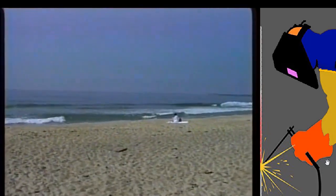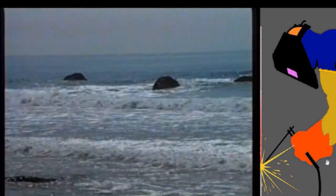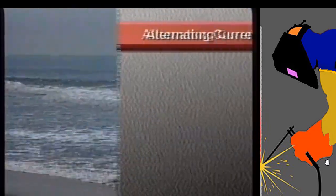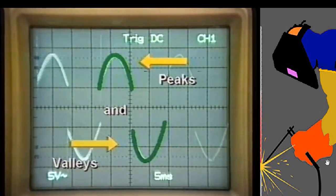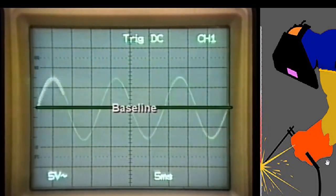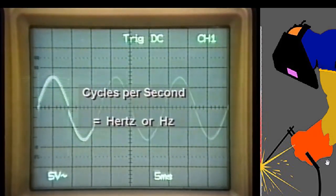Water flowing from a hose as a constant steady stream is like direct current. The electricity supplied to households and to factories in industry is called alternating current, or AC. Let's look at ocean waves breaking on a beach — the waves have peaks and valleys and hit the beach at fairly constant intervals we call cycles. Alternating current has a waveform with peaks and valleys too. We can display the alternating current waveform on an electrical device called an oscilloscope. Alternating current has very regular-looking waves with uniform peaks above and valleys below a baseline. Household current in the United States has 60 waves, or cycles per second. Cycles per second are called hertz, abbreviated as Hz.